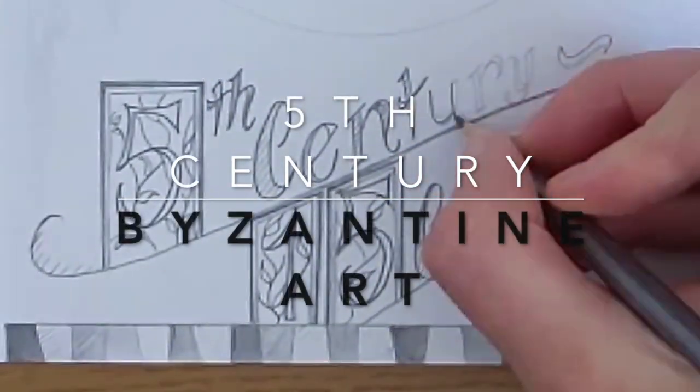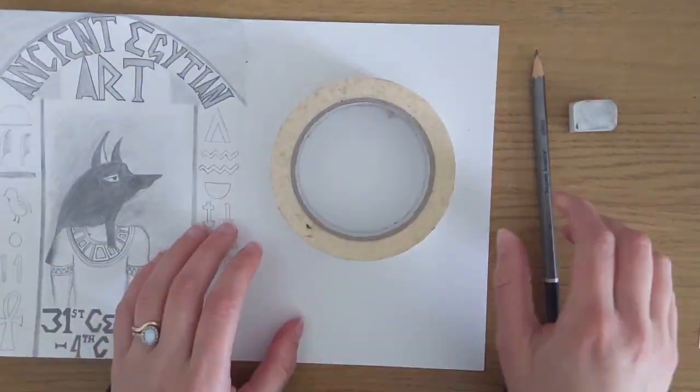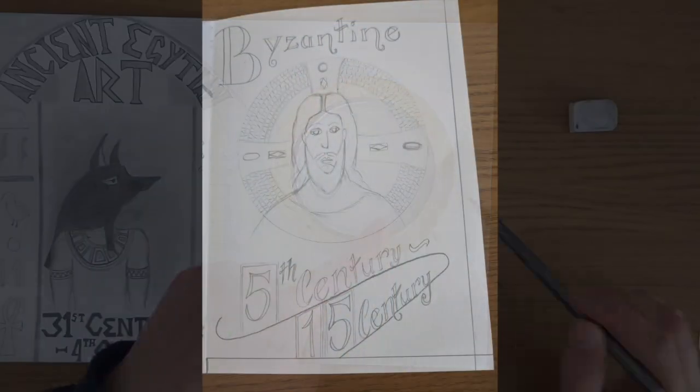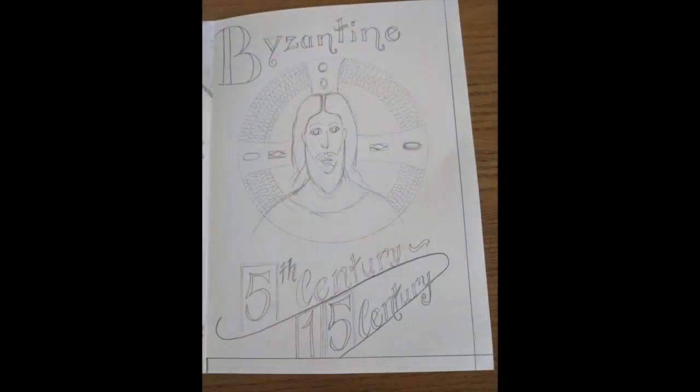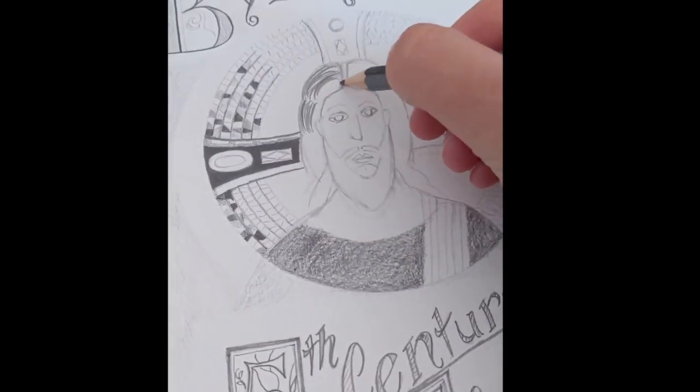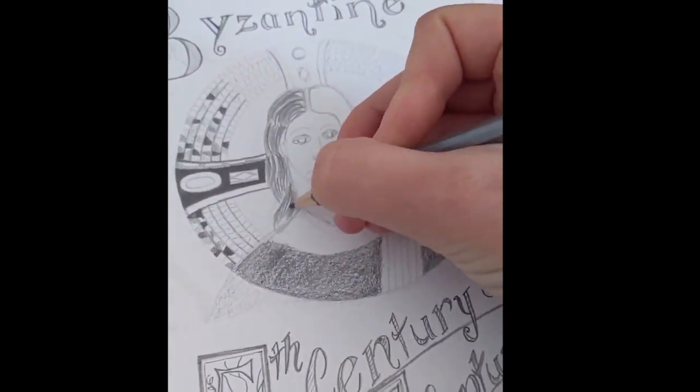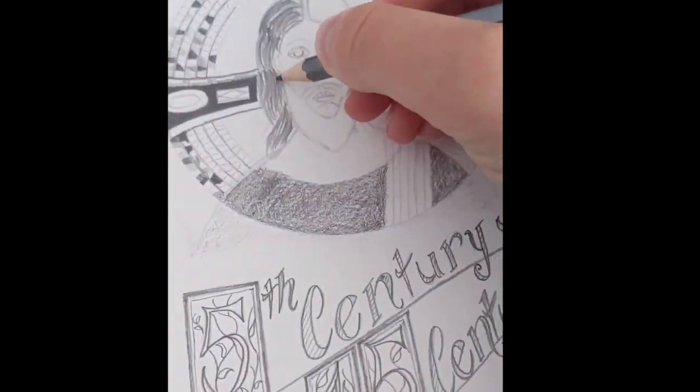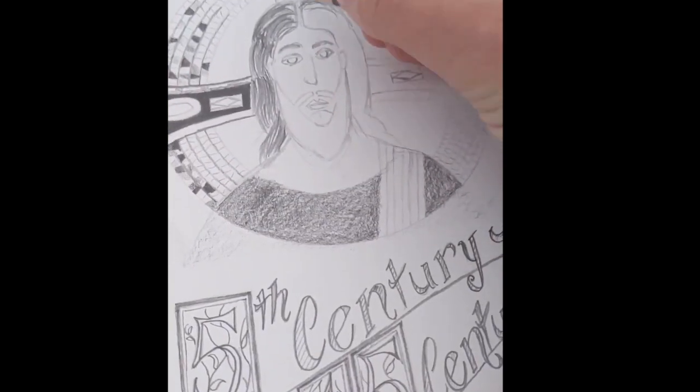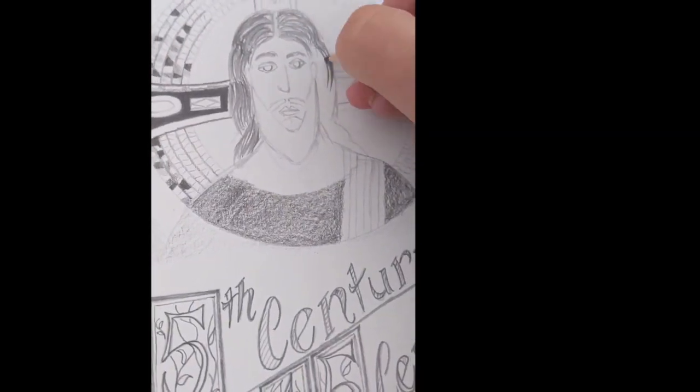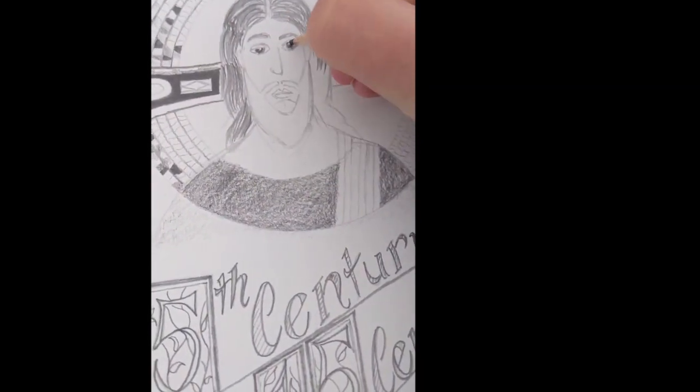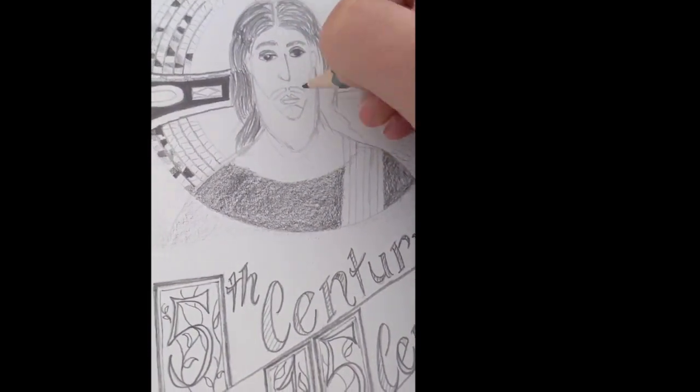Now we're moving on to the 5th century which is Byzantine art. Byzantine art was also linked to the bible and religion. They also created mosaics and used illuminated letters which is decoration around the first letter of a sentence or paragraph just like I've done around the number 5 here. Make sure you use your pencil to add in the dark, mid and light tones.